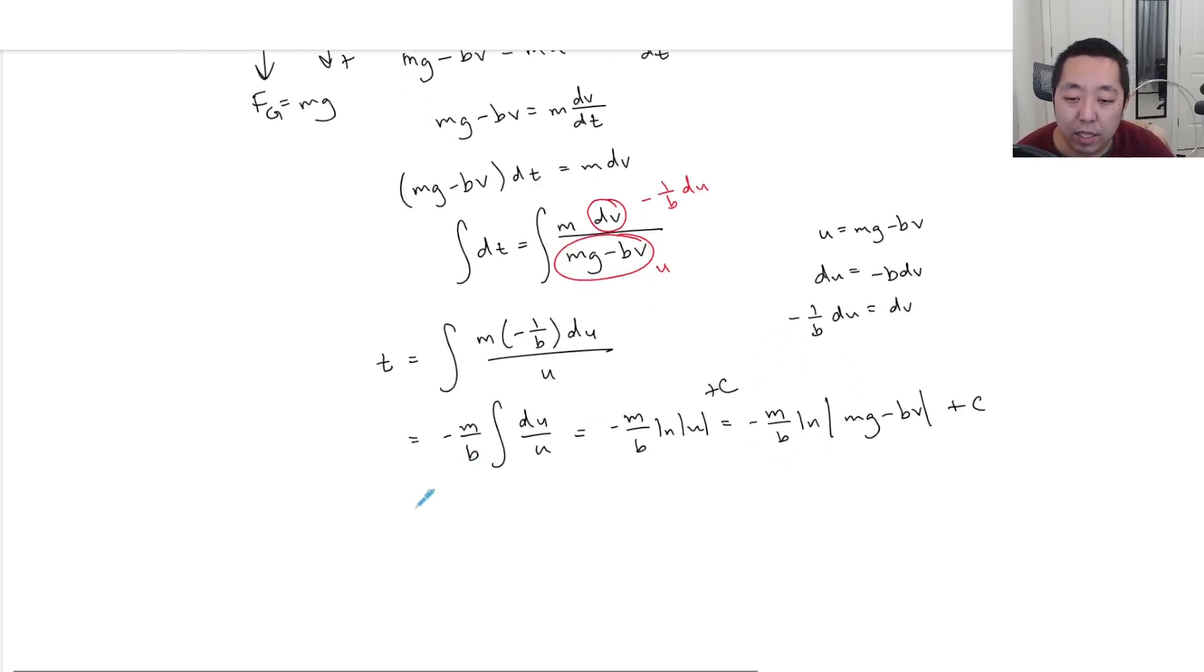This is negative one over B dU. This down here is U. And then we just have a left on the M. So the right side becomes the integral of M times negative one over B dU over U. And you can pull this part out, negative M over B, integral dU over U. Negative M over B, natural log absolute value of U, which is negative M over B, natural log absolute value of Mg minus BV. Oh, there should have been a plus C. Sorry, there should have been a plus C here. I lose points. Your calculus teacher will get mad if you leave out that plus C.